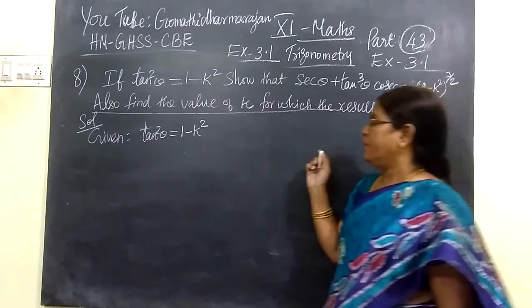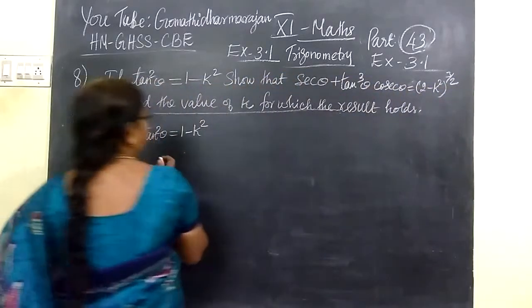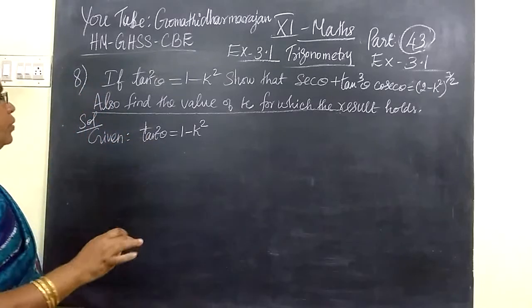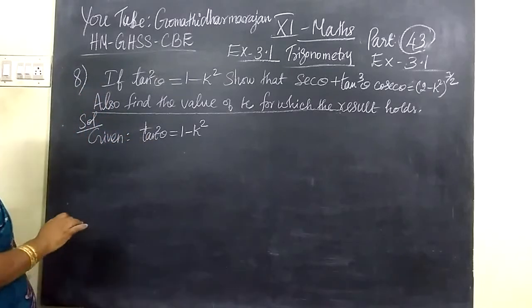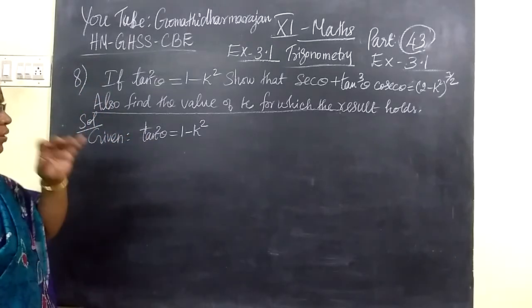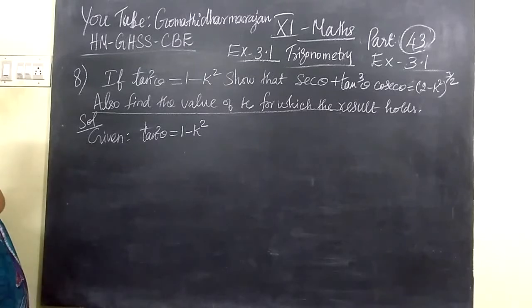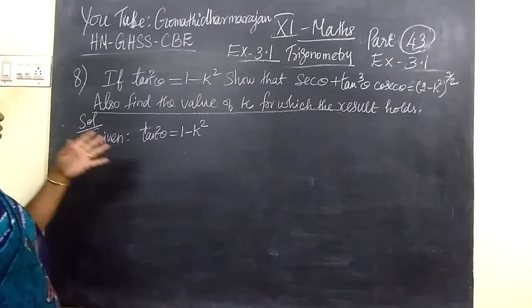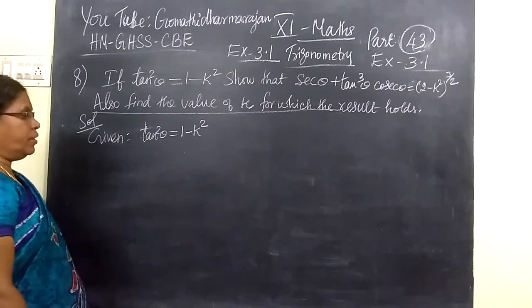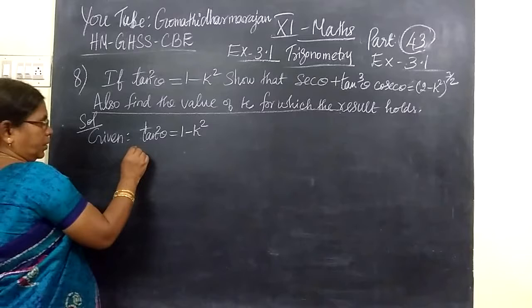You are given that tan θ equal to 1 minus k square. Find the value of k for this. Here you are given tan θ equal to 1 minus k square, so this is the case.